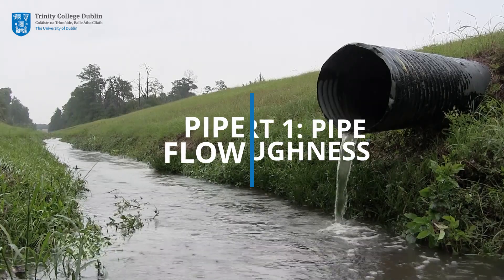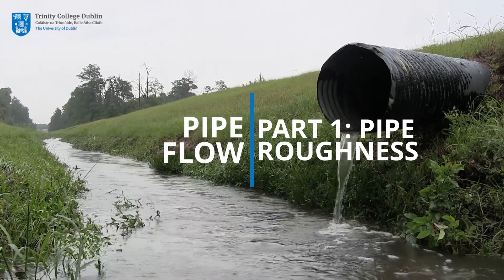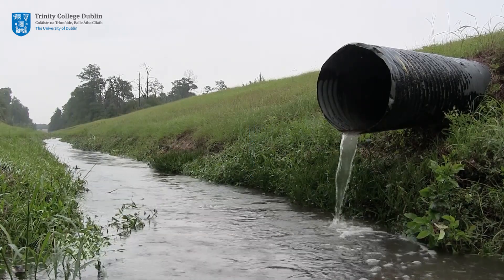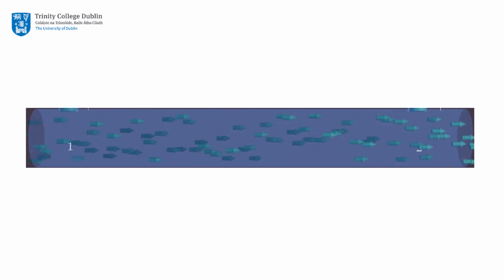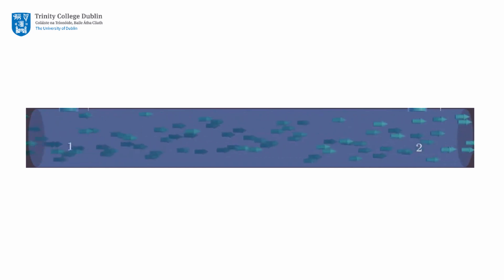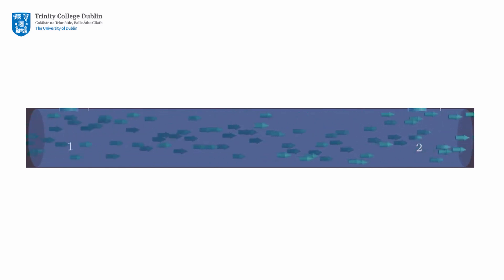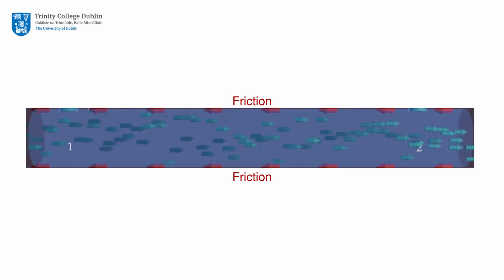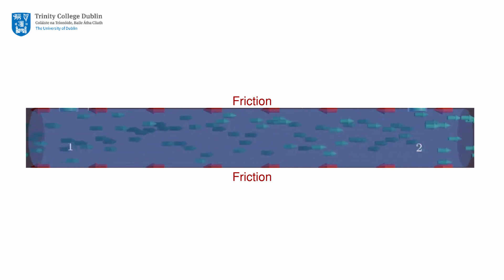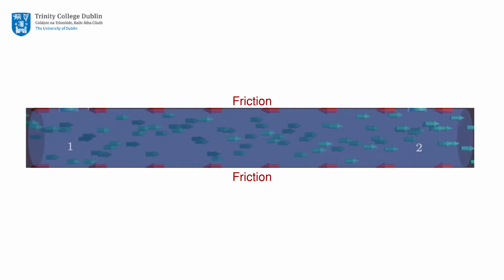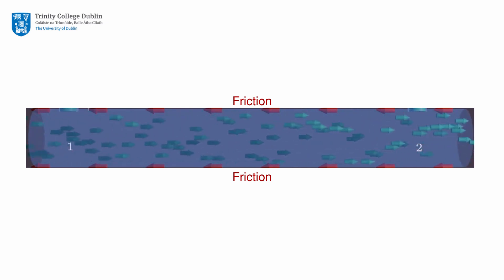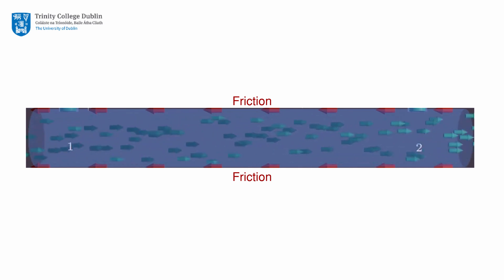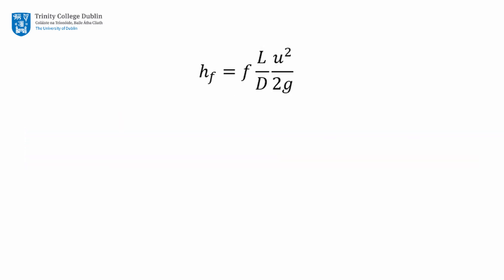Part 1: Head loss due to pipe roughness. Water flowing in a pipe loses pressure, or head, as a result of friction between the fluid and the conduit. The basic representation of friction losses, followed for both laminar and turbulent flow, is the Darcy-Weisbach equation.